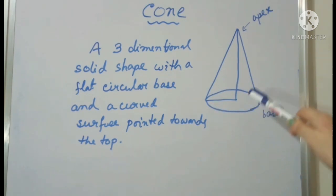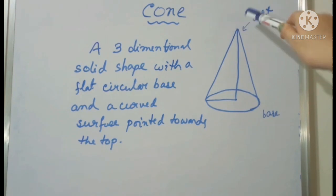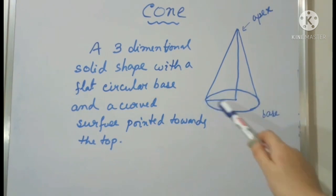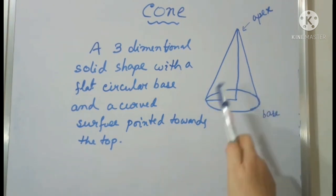Here only one base is there and the other portion upper side is pointed towards the top. This point is called the apex and this is the circular base with a fixed radius. And this is the basic structure of a cone.